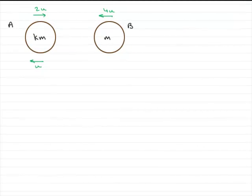Now, before we start, what I'd encourage you to do is to draw a quick sketch of the two particles, something along these kind of lines. We've got the particles A and B, with masses Km and m respectively.